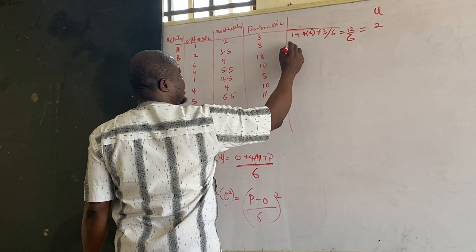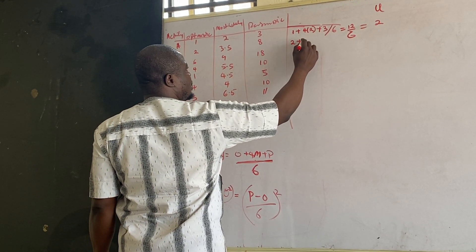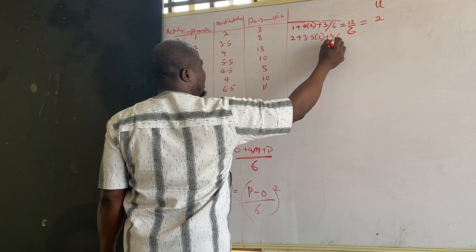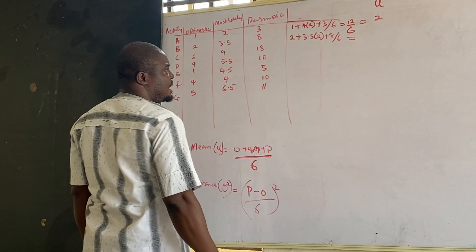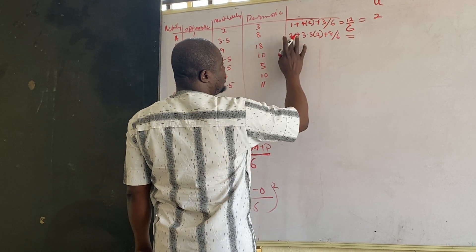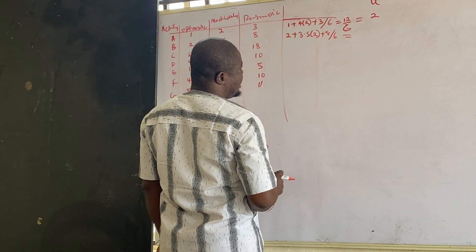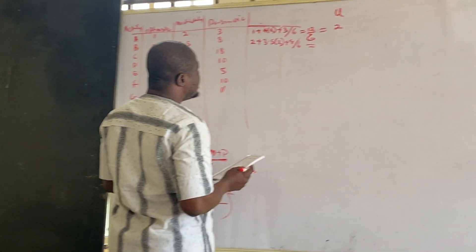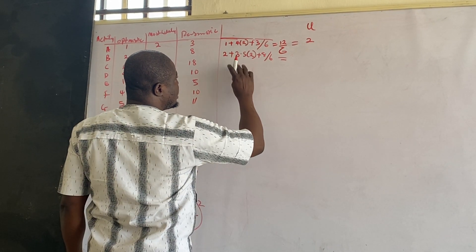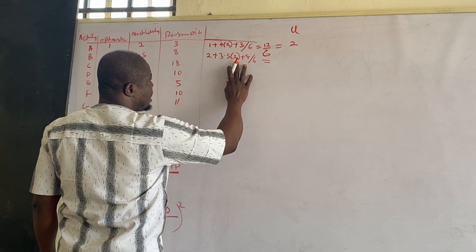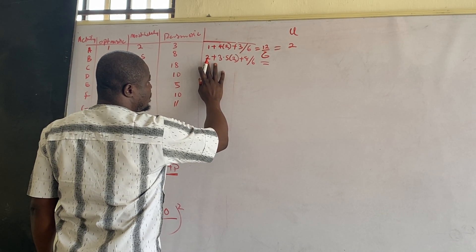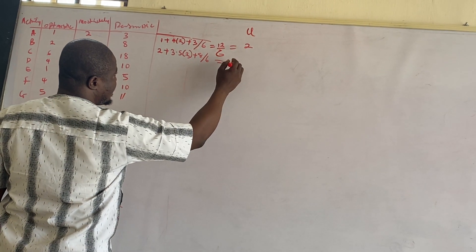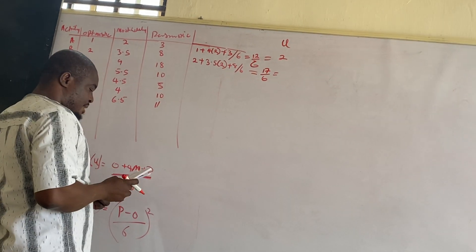To get the next mean: 2 plus 4 times 3.5 plus 8, all divided by 6. That gives us 2 plus 14 plus 8, which is 24. Wait — recalculating: 2 plus 3.5 times 4 is 14, plus 8 gives 17 over 6. So this mean is 17 over 6.